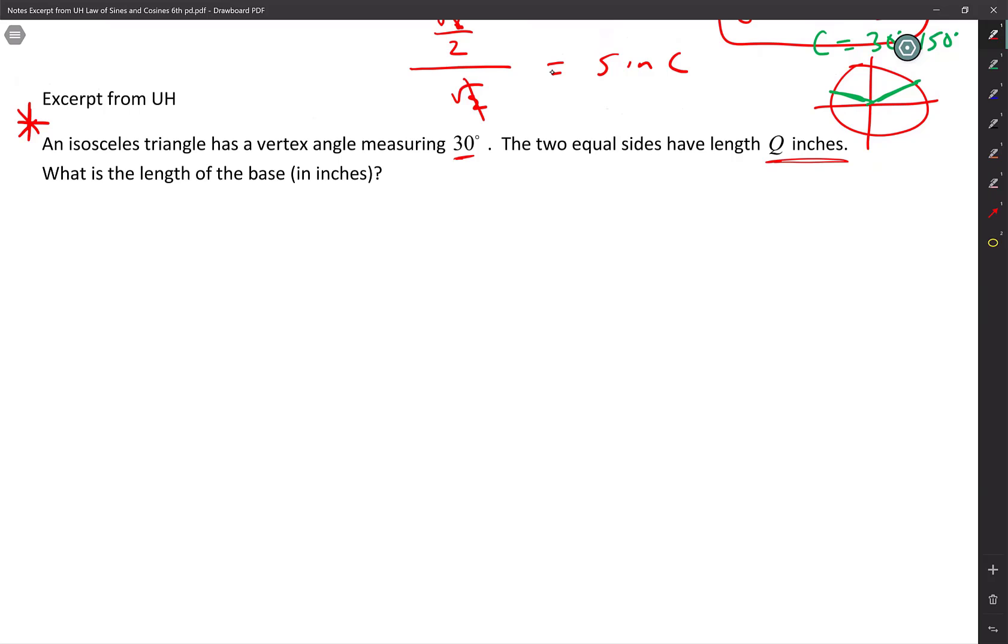All right, so we've got to know a few words. Do we know what an isosceles triangle means? Hopefully you do. An isosceles triangle means that two sides are the same. So I'm going to say those two sides, and it's not to scale.